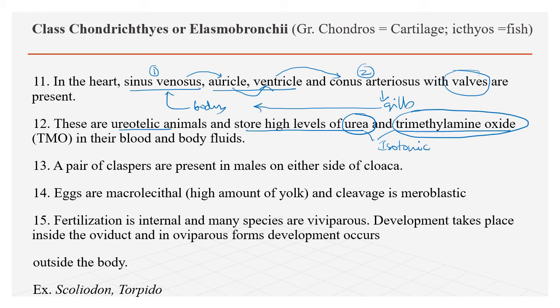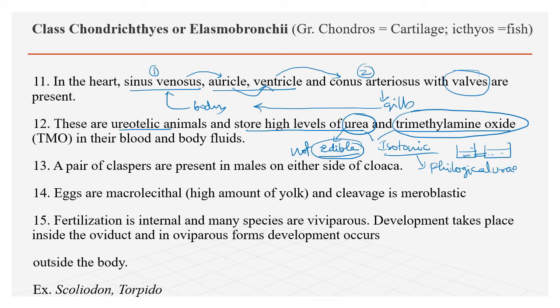Urea and trimethylamine oxide stored inside the body help maintain isotonic conditions relative to sea water. Because of this, adult sharks are not edible due to the presence of urea, which produces a foul smell. This condition is called Physiological Uraemia.